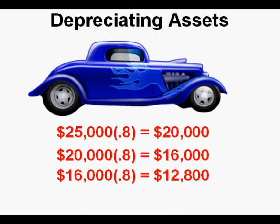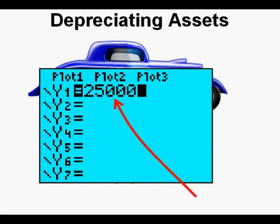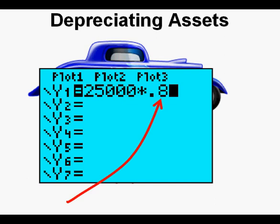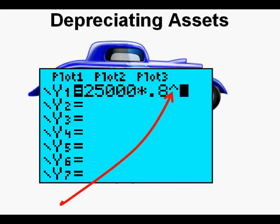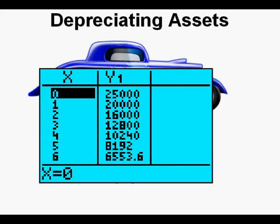This goes on and on. With the graphing calculator it's even easier. Go to the Y= view and enter the initial value of 25,000. Next, multiply by 0.8 for 80% — that's a 20% decline rate. Then enter the exponent key — the little rooftop symbol on the right side of the keypad — and press the X key to complete the function. Now look at the table view by pressing Second then the Graph key. Under Y1 you can see the values of the car from year to year.